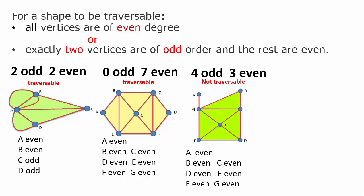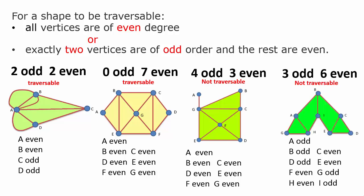Similarly for the last one, that is not traversable. There are three odd vertices, and we are not allowed to have more than two.